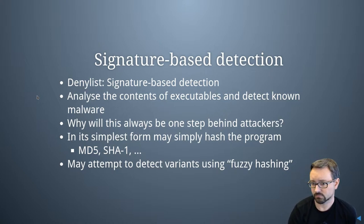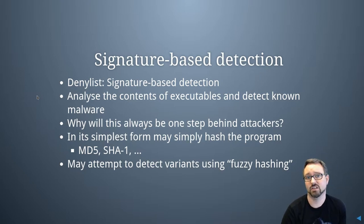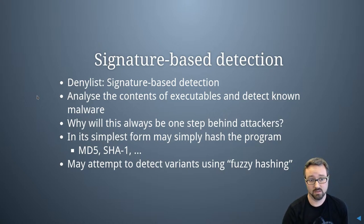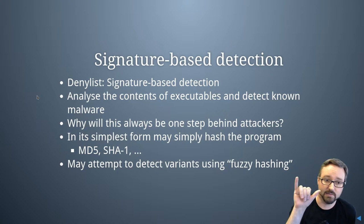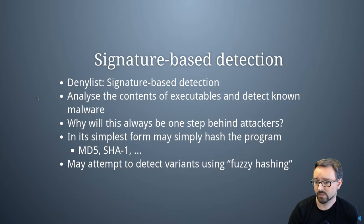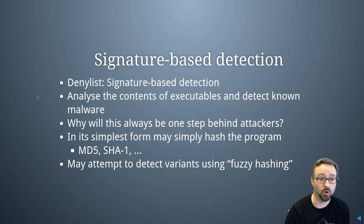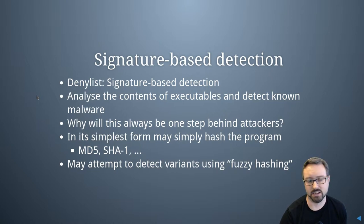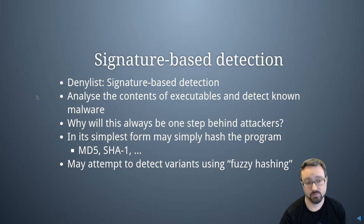The simplest form of signature-based detection is to create a hash of the program — you could use MD5, SHA1, SHA2, or SHA3 to create a hash representing that executable file. If that specific hash appears again, you know to deny it. There are also other approaches that use fuzzy hashing or more clever signature writing to detect categories or mutations of a specific piece of malware.